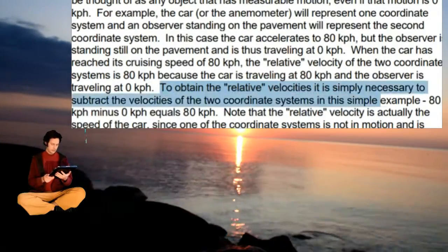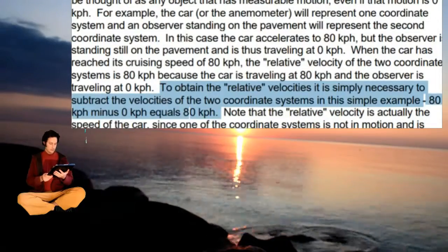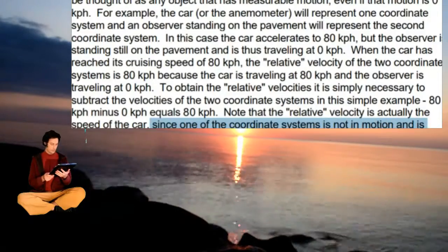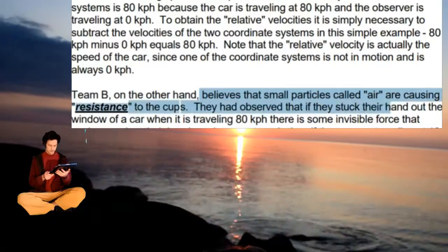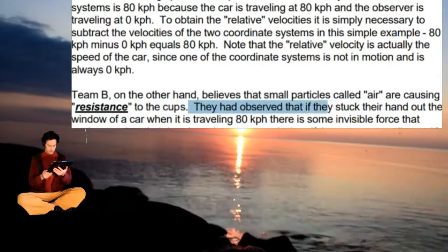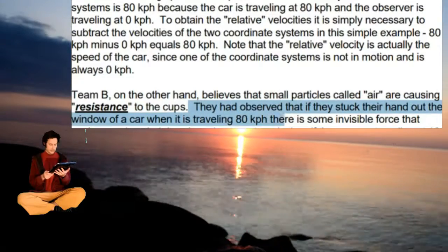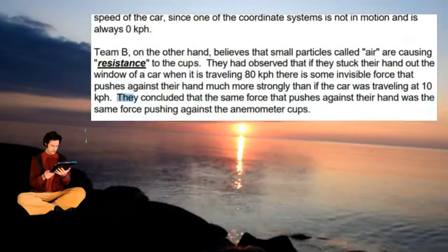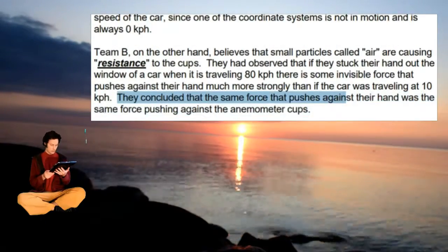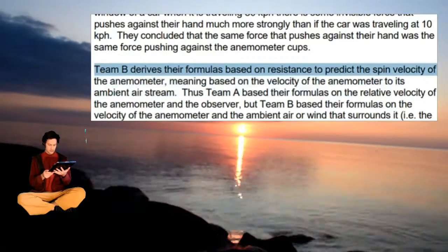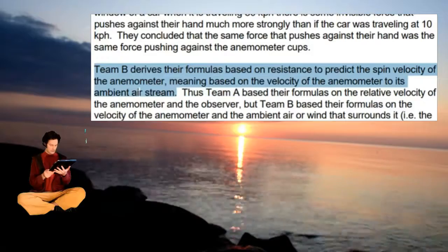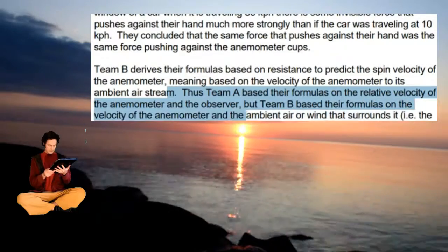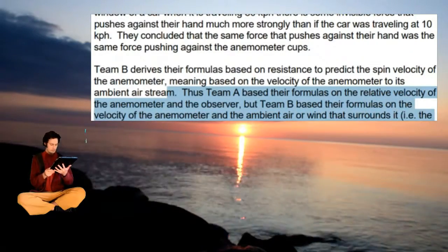To obtain the relative velocities, it is simply necessary to subtract the velocities of the two coordinate systems: 80 kph minus 0 kph equals 80 kph. Note that the relative velocity is actually the speed of the car, since one coordinate system is not moving. Team B, on the other hand, believes that small particles called air are causing resistance to the cups. They observed that sticking a hand out the car window at speed produces an invisible force, and concluded that the same force pushing against their hand was pushing against the anemometer cups. Team B derives formulas based on the velocity of the anemometer relative to its ambient air stream — that is, the ambient velocity.